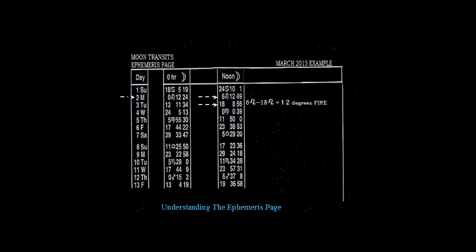The next day on the moon transit ephemeris page, we go to March 4th which is on a Wednesday. We see on March 4th under moon, the moon entered 0 degrees Virgo. And the next day which is the 5th on a Thursday, we see that it entered 11 degrees of Virgo. So the difference between 0 degrees Virgo and 11 degrees Virgo is 11 degrees.